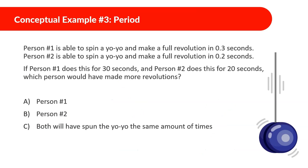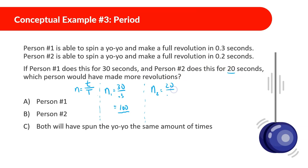Now, person one spins a yo-yo with a full revolution in 0.3 seconds for 30 seconds. Person two does the same with 0.2 seconds per revolution for 20 seconds. Which person makes more revolutions? For person one: 30 divided by 0.3 equals 100 times. For person two: 20 divided by 0.2 equals 100 times. Both spin the yo-yo the same number of times.